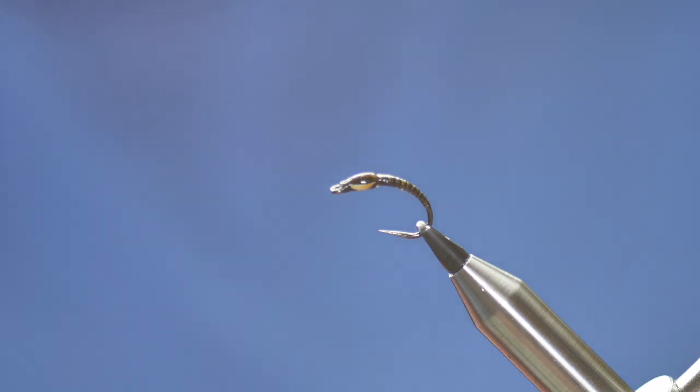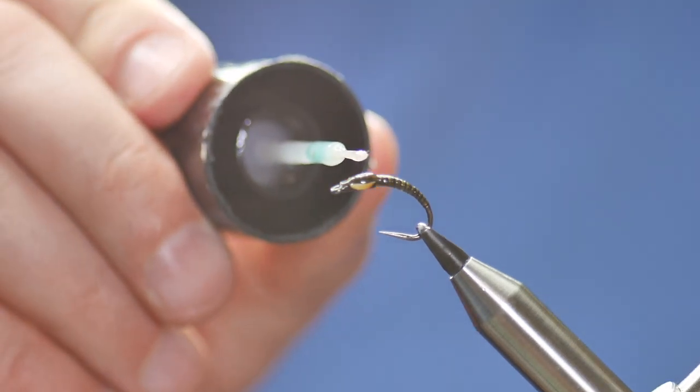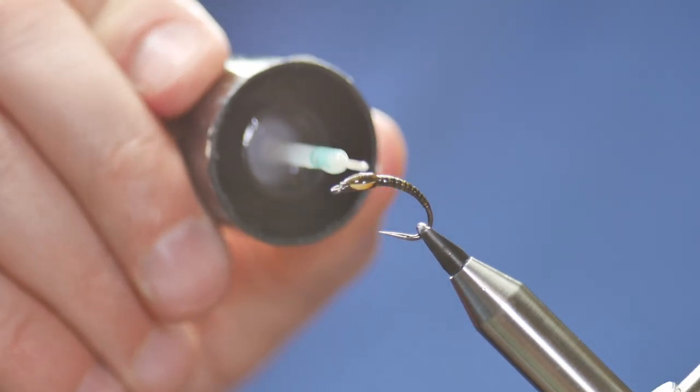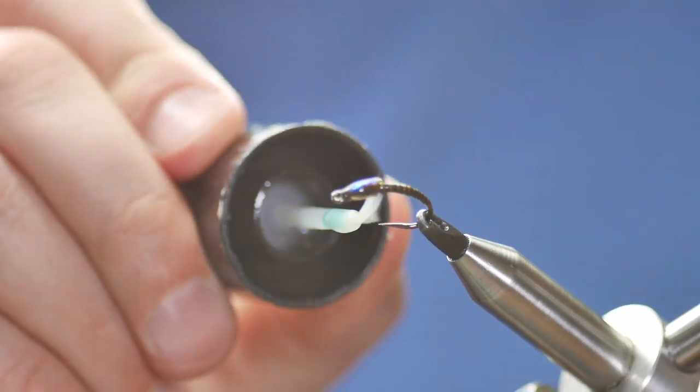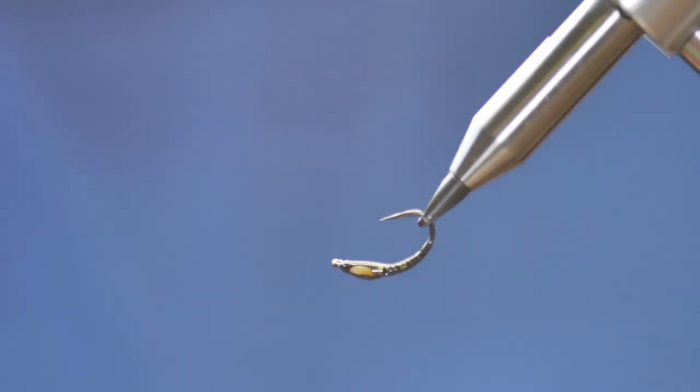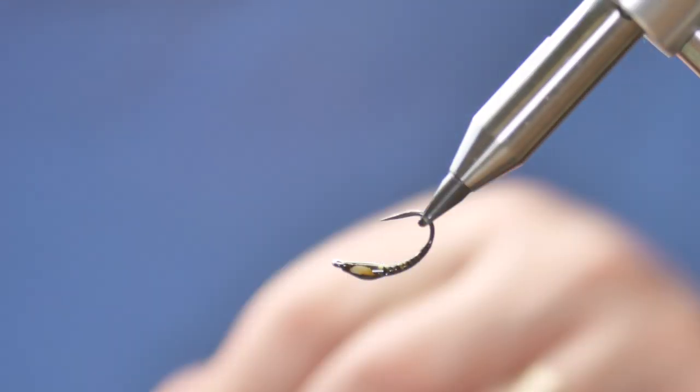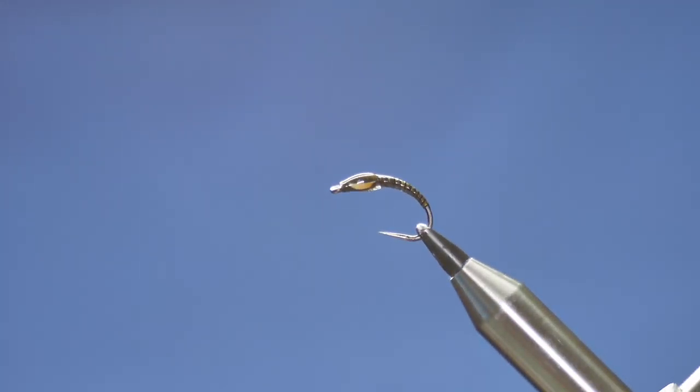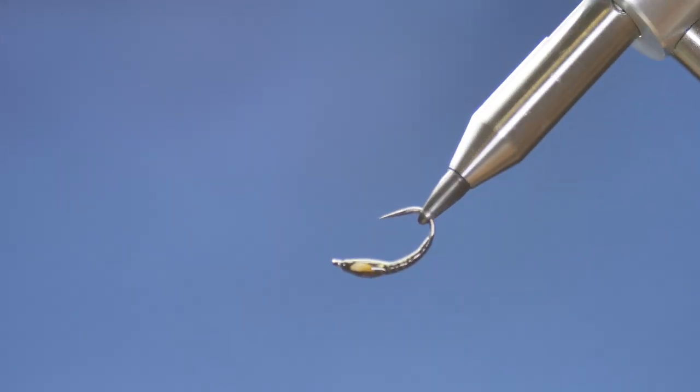I've still got my nice tapered body and a hint of a thorax area. The next bit of resin, and I'm going to add a little bit more to my brush this time, is going to concentrate in the thorax area. The key to this, when using UV resins, is to try and keep your vise moving.